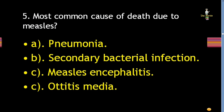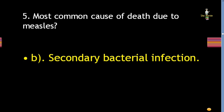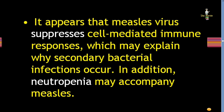Next question: most common cause of death due to measles is pneumonia, secondary bacterial infection, measles encephalitis, or otitis media? Correct answer is secondary bacterial infection. It appears that measles virus suppresses cell-mediated immune responses, which may explain why secondary bacterial infections occur. In addition, neutropenia may accompany measles.